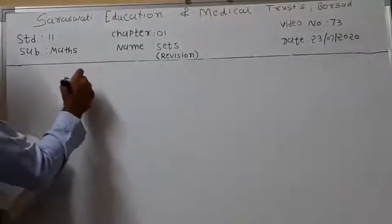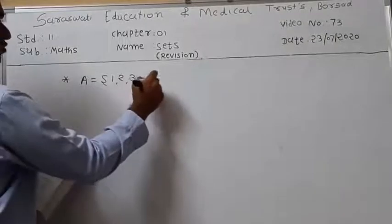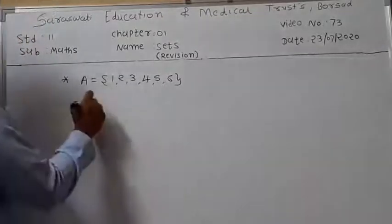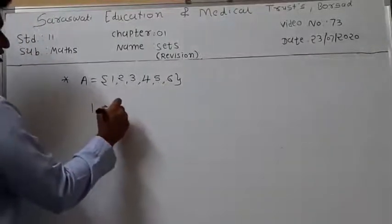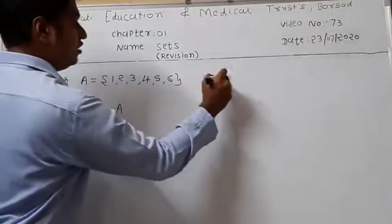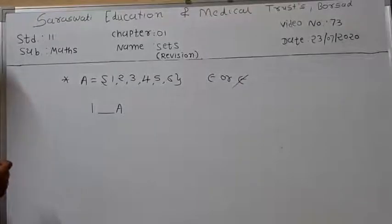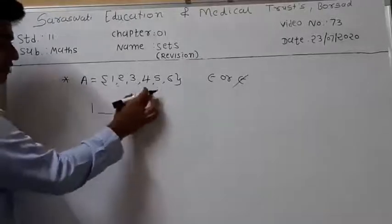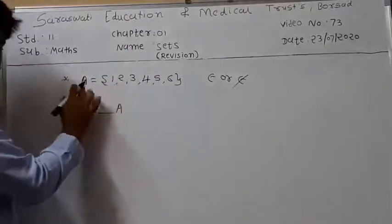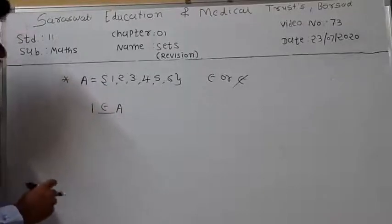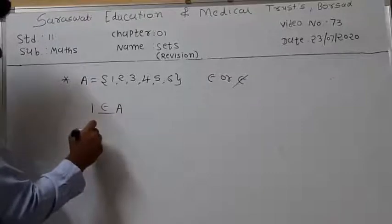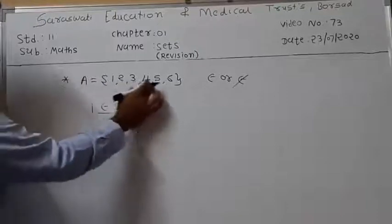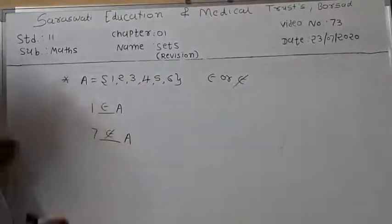Suppose set A equals {1, 2, 3, 5, 6}. Does 1 belong to A? Since 1 is present in set A, we write: 1 belongs to A. In the case of 7: since 7 is not present in set A, we write: 7 does not belong to A.